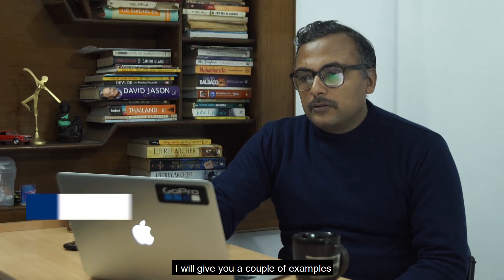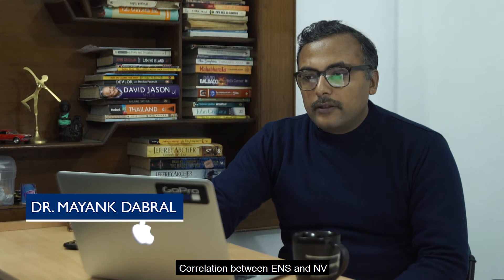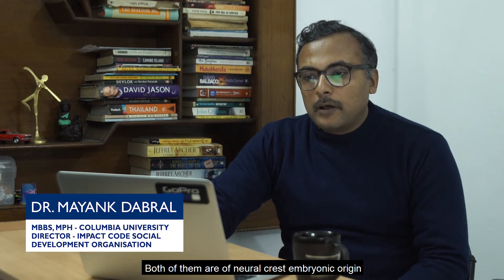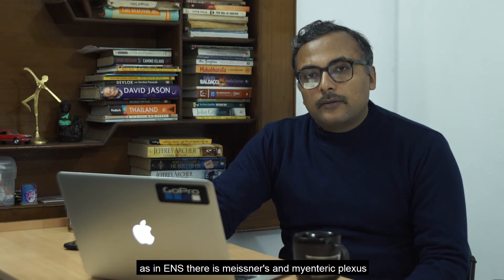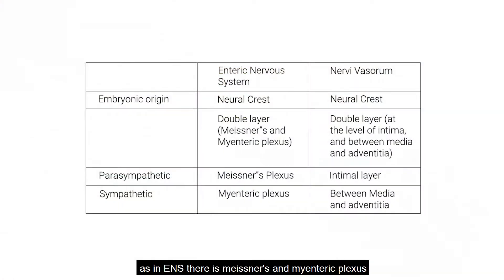I'll give you a couple of examples — correlation between the enteric nervous system and the neurovascular system. Both are of embryonic origin from the neural crest. Both are double-layered: in the enteric nervous system there is the submucosal plexus and the myenteric plexus, while in the neurovascular system there is a layer at the intimal level and a layer between the media and adventitia.